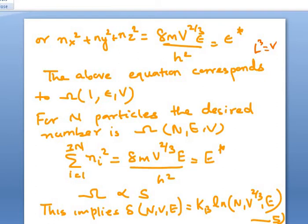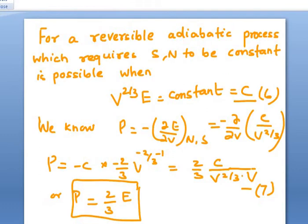Moving from equation 5, we will express our expression for a reversible adiabatic process. For a reversible adiabatic process which requires S and N to be constant, this is possible only when V^(2/3) E = constant. We know this is a function of N,V,E. Here we know N is fixed and this is also constant, so V^(2/3) will be a constant. Let us name this constant = C and name this as equation 6.